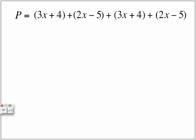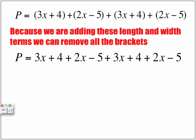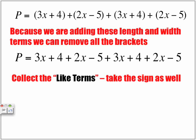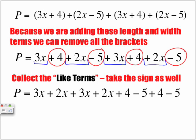Here we have the expression as we wrote in the slide just a second ago. Because we are adding these lengths and widths terms, we can remove all the brackets. We remove all the brackets, and what we want to do is collect like terms. Take the signs as well. We have 3x, positive 2x, positive 3x, and positive 2x. Those are like terms. We're going to use circles to represent the other type of like terms. We have positive 4, negative 5, positive 4, negative 5.